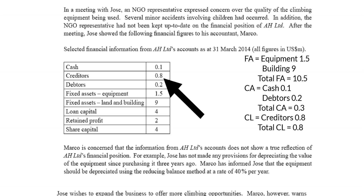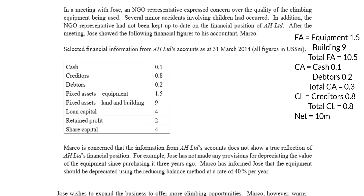Considering non-current liabilities — liabilities expected to be paid in the future, perhaps due to the amount and agreement with banks — in this scenario there aren't actually any non-current liabilities. So now we can calculate the net total. Net just means the difference. I recommend first calculating the current net: current assets of 0.3 minus current liabilities of 0.8 gives negative 0.5. Fixed assets of 10.5 minus that net current of 0.5 leaves a net total of 10 million.